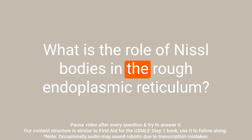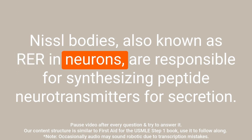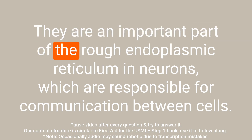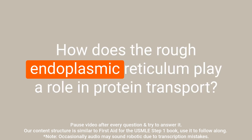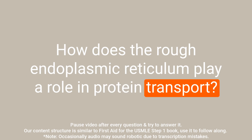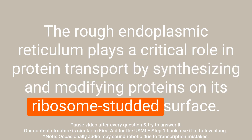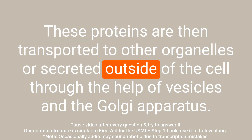Question: What is the role of Nissl bodies in the rough endoplasmic reticulum? Answer: Nissl bodies, also known as RER in neurons, are responsible for synthesizing peptide neurotransmitters for secretion. They are an important part of the rough endoplasmic reticulum in neurons, which are responsible for communication between cells. Question: How does the rough endoplasmic reticulum play a role in protein transport? Answer: The rough endoplasmic reticulum plays a critical role in protein transport by synthesizing and modifying proteins on its ribosome-studded surface. These proteins are then transported to other organelles or secreted outside of the cell through vesicles and the Golgi apparatus.